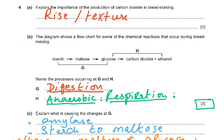Question 4: explain the importance of the production of carbon dioxide in bread making. When we knead the dough and add yeast, the yeast respires and produces carbon dioxide. The CO2 makes the dough rise, giving the bread a soft and spongy texture — very different from roti, where the dough is not allowed to rise.